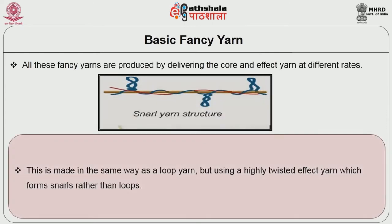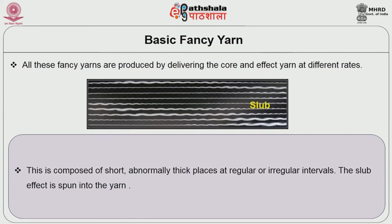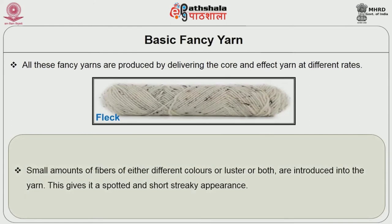Next is snarl fancy yarn, made in the same way as a loop yarn but using highly twisted effect yarn which forms snarls rather than loops. Next is spiral or corkscrew yarn — the applied yarn in which one of the components wraps around the other rather than the components twisting regularly together under the same tension. A spiral yarn tends to have a higher twist than a corkscrew yarn. Next is slub yarn, composed of short, abnormally thick places at regular or irregular intervals — the slub effect is spun into the yarn, giving a special effect on the fabrics. Next is cloud yarn — a two-color yarn in which both yarns take turns to obscure or cloud the other, giving the appearance of an intermittent color change. Next is flak yarn, where small amounts of fibers of either different colors or lustre or both are introduced into the yarn, giving it a spotted or streaky appearance.